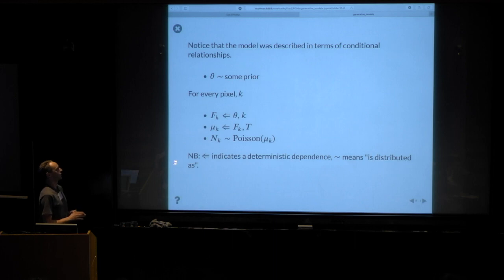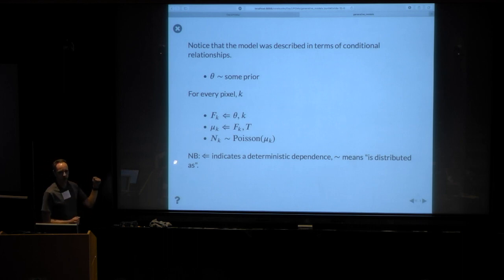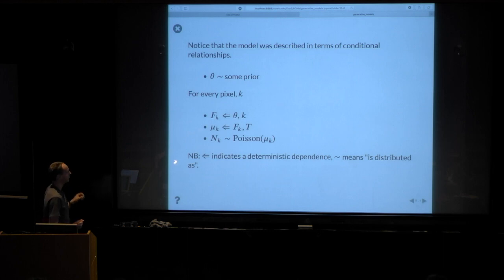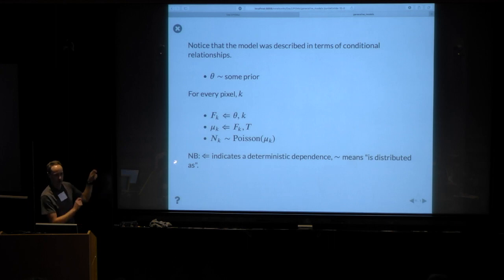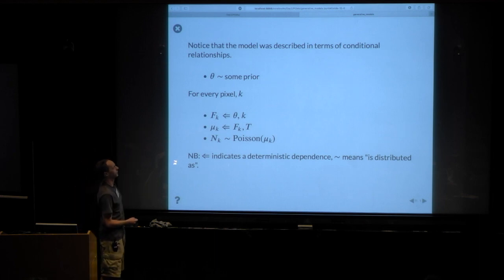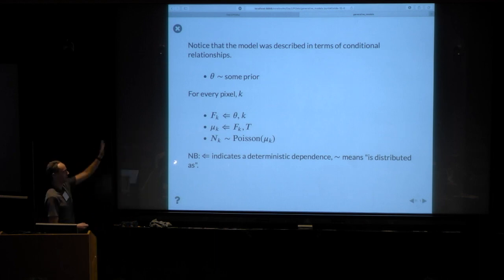Even just describing it in words, I basically made a bulleted list describing conditional relationships. The notation: in statistics, the tilde symbol has a very precise definition — the left-hand side is a random variable distributed as the PDF on the right-hand side. That is not what it means in physics, where it means 'kind of sort of like.' We have to keep this straight when talking to the right people.